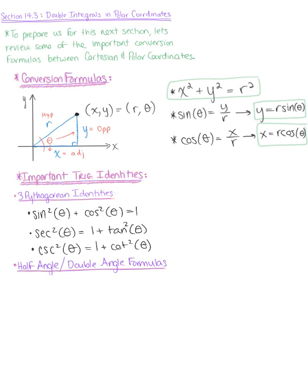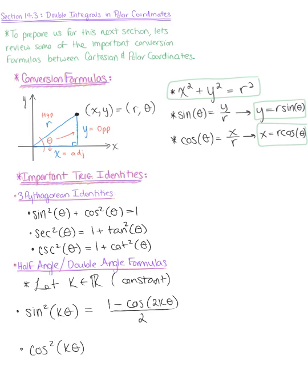Now, in addition to our good old friends these Pythagorean identities, we want to keep in mind the following half angle and double angle formulas. For these formulas, I'm going to let k be some scalar or some constant. So then we have our half angle formulas. We know that sine of k times theta squared is equal to 1 minus cosine of 2k times theta squared. We also have cosine of k times theta squared is equal to 1 plus cosine of 2k theta all by 2. So those are half angle formulas.